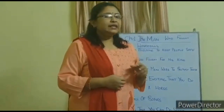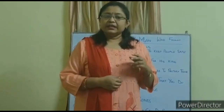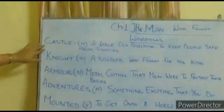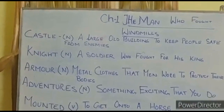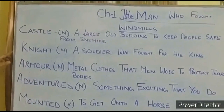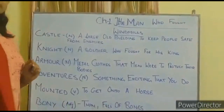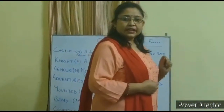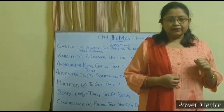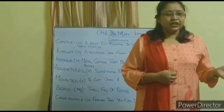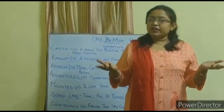The main character of the story, Don Quixote, used to live in Spain in a castle. Castle is a noun which means a large, old building to keep people safe from enemies. He wanted to become a knight — knight is a noun meaning a soldier who fought for his king. Don Quixote always wanted to do some heroic deed as a knight. He always wished to wear armor, mount on a horse, and go for an adventure. But the world and time had changed — it wasn't the time where knights and magical adventures took place.